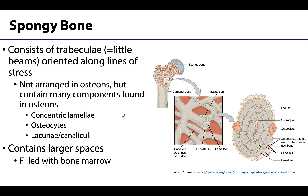Spongy bone has the same structures as compact bone, but the key difference is that they are not arranged into osteons. Spongy bone has very distinct trabeculae — little beams or columns of bone — separated by much larger spaces filled with red or yellow bone marrow depending on the bone. Although the trabeculae appear irregular, they are precisely organized along lines of stress, often where stress comes from multiple directions. These spaces also help reduce the overall weight of the skeletal system.